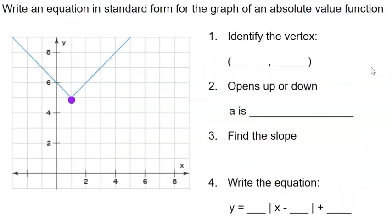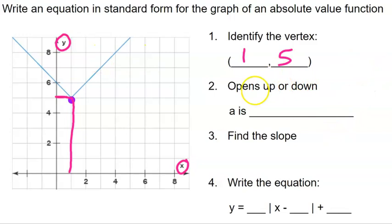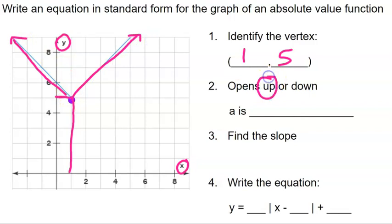We are going to practice writing equations and graphing absolute value functions. Starting with this graph, we'll write an equation in standard absolute value form. Our first step is always to identify our vertex. This point lines up with one on our X axis and five on our Y axis. Then we answer: does it open up or down? In this case it opens up, which means our A is going to be a positive value.